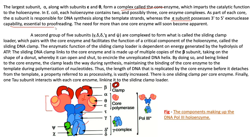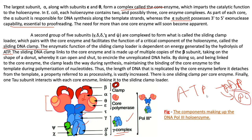A second group of five subunits — gamma, delta, delta prime, chi, and psi — form what is called the sliding clamp loader, which pairs with the core enzyme and facilitates the function of the critical component called the sliding DNA clamp. The enzymatic function of the sliding clamp loader is dependent on energy generated by the hydrolysis of ATP — ATP is hydrolyzed to ADP with removal of a phosphate group, generating the energy needed.